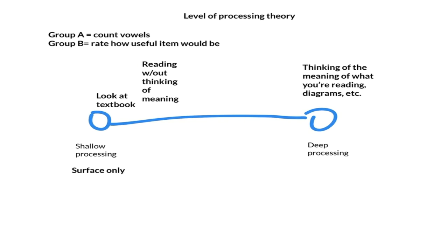Where group A is really just looking at the word, using very shallow processing and counting the number of vowels. You don't have to think of the meaning to do that. And group B definitely had to think of the meaning as you consider, hey, how useful would this be to me if I was on a deserted island.